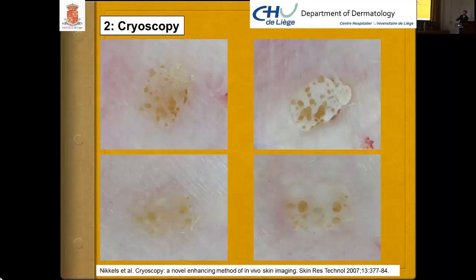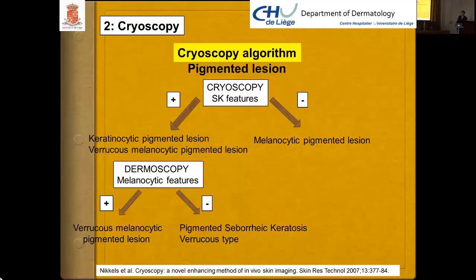Using this algorithm, in the presence of a pigmented lesion, when cryoscopy gives features of seborrheic keratosis, when they are absent, we are likely dealing with a melanocytic pigmented lesion. When positive, we have a differential diagnosis between a keratocytic pigmented lesion or a dermoscopic pigmented lesion, further refined by dermoscopy.